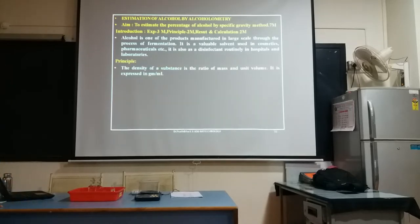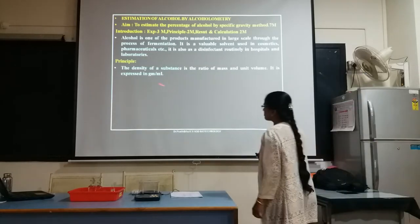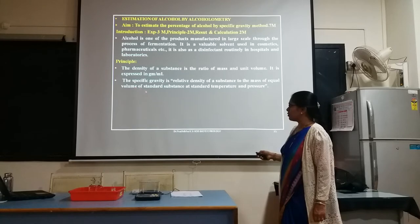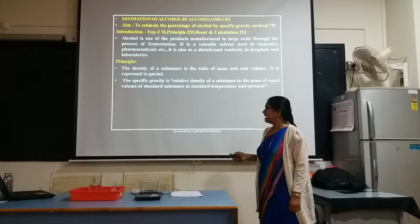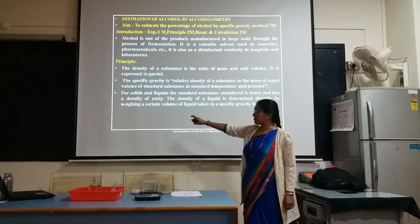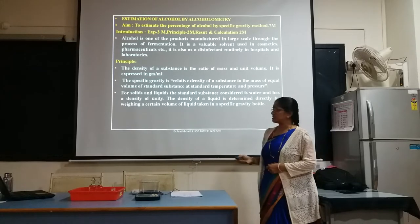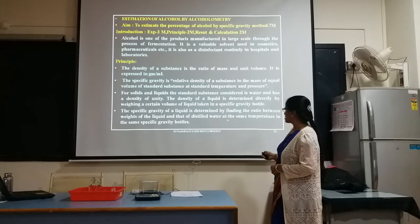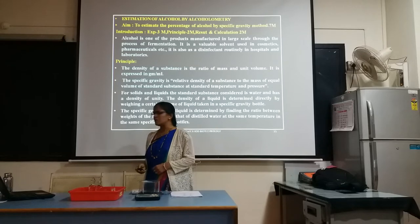Now let us go through the principle behind this experiment. The density of a substance is the ratio of mass and unit volume, expressed in grams per ml. The specific gravity is the relative density of a substance to the mass of equal volume of a standard substance at standard temperature and pressure. You must keep this particular sentence in mind — unit is compulsory and you need to highlight it. For solids and liquids, the standard substance is water and has a density of unity. The density of a liquid is determined directly by weighing a certain volume of liquid taken in a specific gravity bottle. The specific gravity of a liquid is determined by finding the ratio between the weights of the liquid and that of distilled water at the same temperature in a specific gravity bottle.